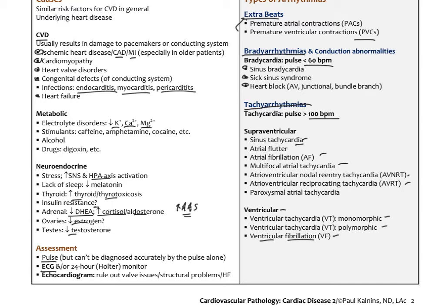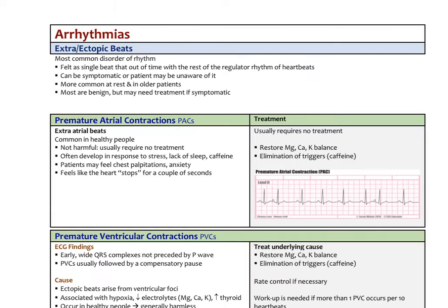There are many other less common arrhythmia variants, but these are the most common. It's important to know clinically how they might present and when we might need to make a referral for appropriate assessment. Ectopic beats are the most common disorder of rhythm — felt as a single beat out of time with the rest of the regular heart rhythm. It can be symptomatic or the patient can be unaware; typically people feel a skipped beat. It's most common at rest and in older patients the majority are benign, but may need treatment if symptomatic.